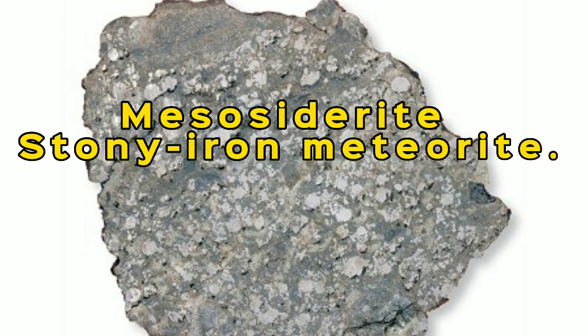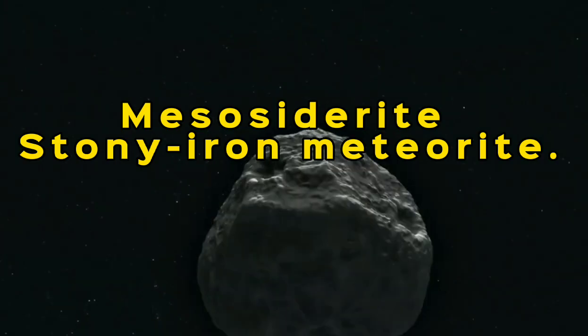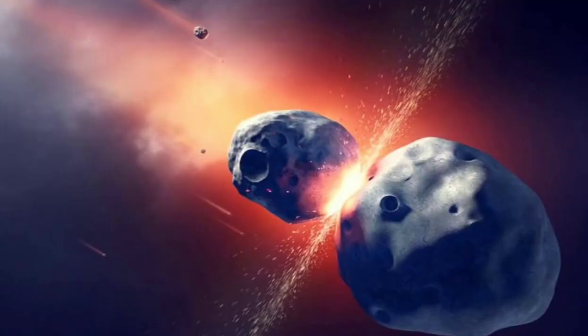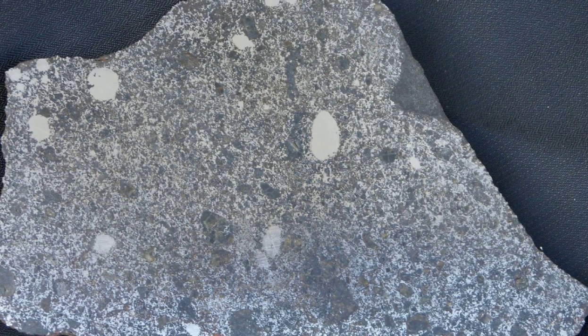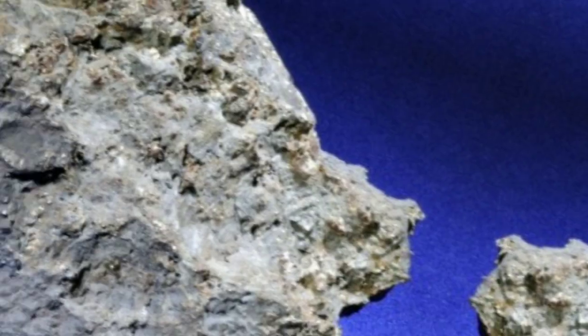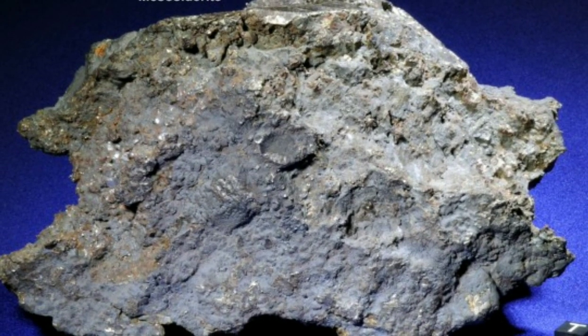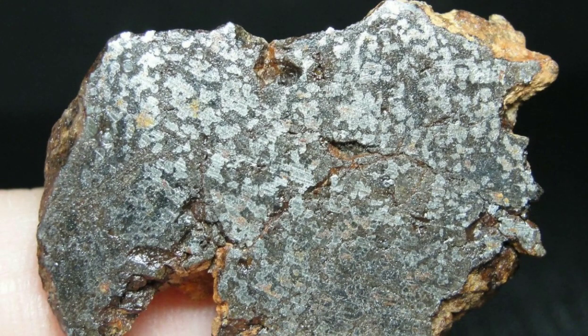Mesosiderites. The Estherville mesosiderite formed after a collision between two asteroids. Mesosiderite meteorites are breccias — a variety of rock composed of broken fragments of minerals or rock cemented together by a finer material. The fragments are roughly centimeter-sized and contain a mix of igneous, solidified silicate and metal clasts — rocks made of pieces of older rocks.